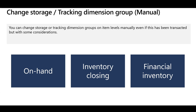Now let's talk about how to change the storage or tracking dimension groups of items that have already been transacted. This is essential in scenarios like items created without the intention of being tracked by batch or serial, but later required to be tracked per serial or batch — or items that need the advanced warehouse management process but whose storage dimension group only has site and warehouse level enabled with location level disabled. The prerequisites are: ensure there is no on-hand for this item, perform inventory closing, and ensure there are no changes on the financial inventory levels.